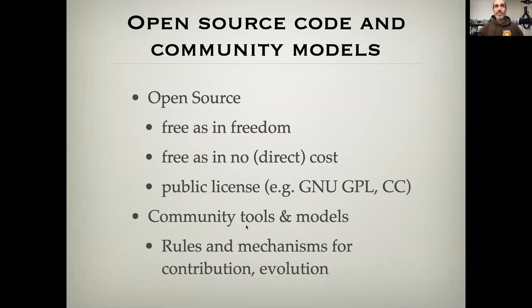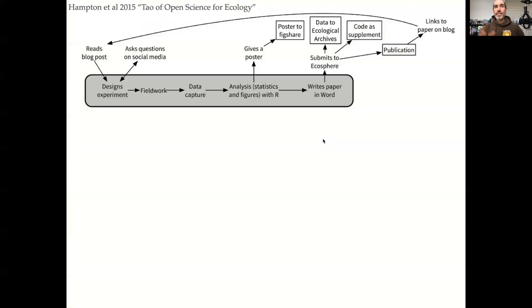And then if you're going to get involved with larger open source projects or the development of community tools or models, it's important to have an understanding of what the mechanisms and rules are for how you contribute to that code and how the projects evolve over time. This next set of figures comes from a nice paper from Hampton et al about open science and ecology. In these figures, which represent a gradient of open science approaches, what's in gray are things that are kind of closed shop. They might occur within your lab group. The things in white boxes are the things that are open to the broader community.